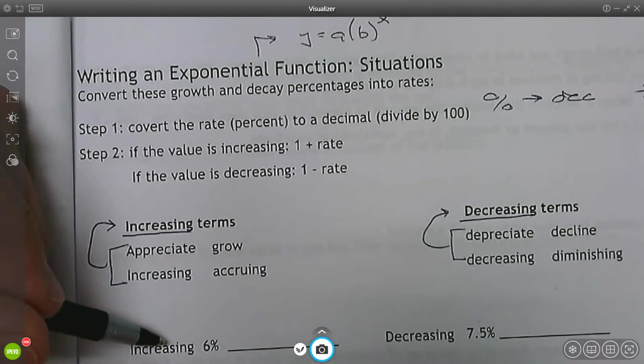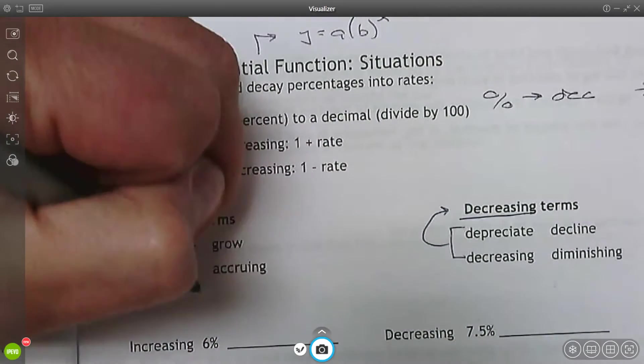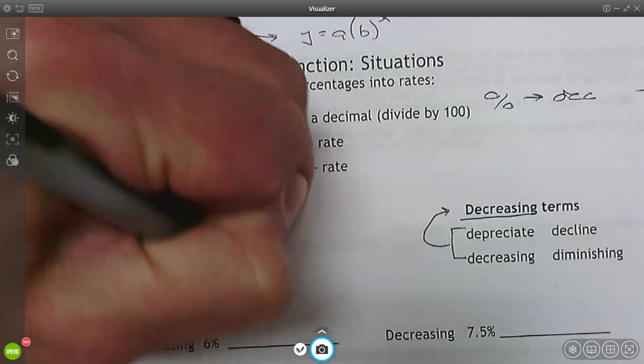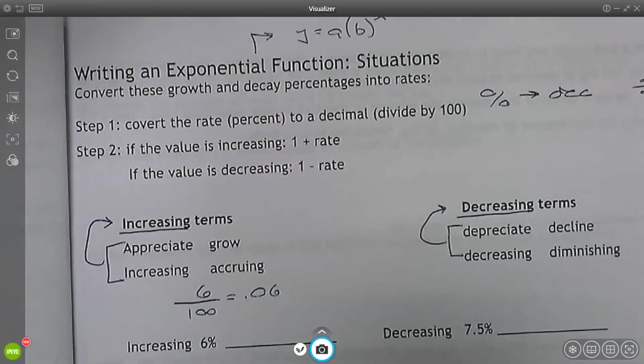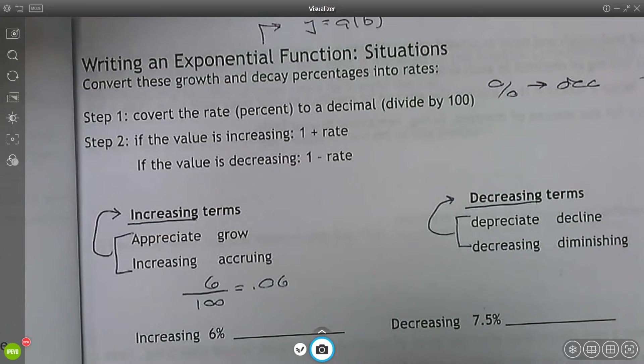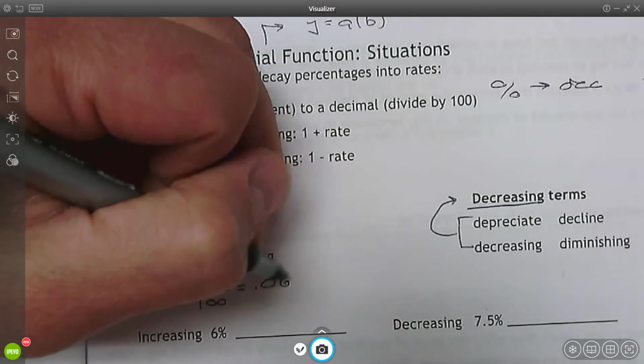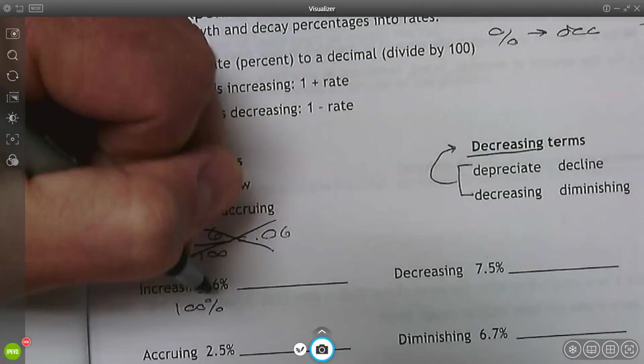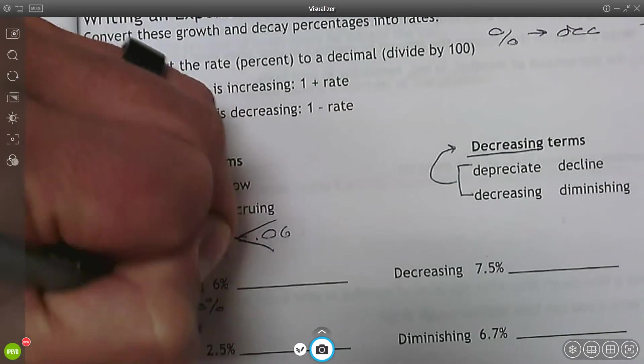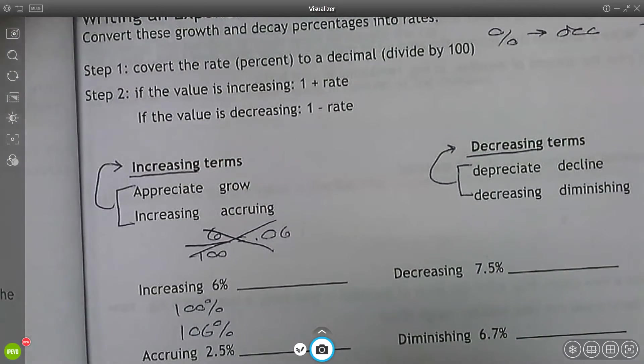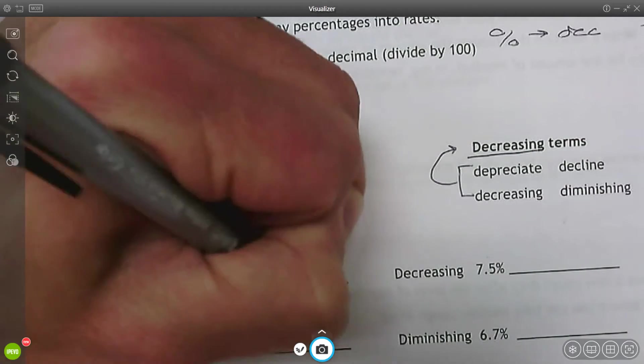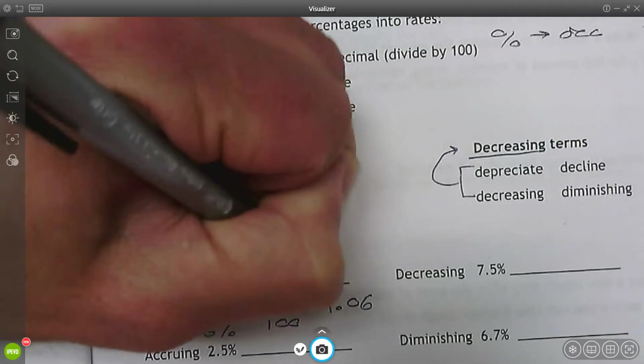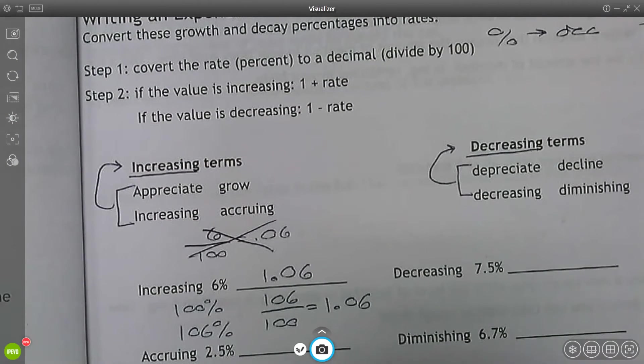So this first one, increasing by 6%. We want to figure out what the rate is. So I'm going to convert 6% to a decimal. So I'm going to divide it by 100. That's 0.06. All right. Wait, I want to take that back. I said before you always start at 100%. So if I increase by 6%, now I'm at 106%. Now I want to convert the 106 to a decimal. 106 divided by 100 is 1.06. So that growth rate would be 1.06.